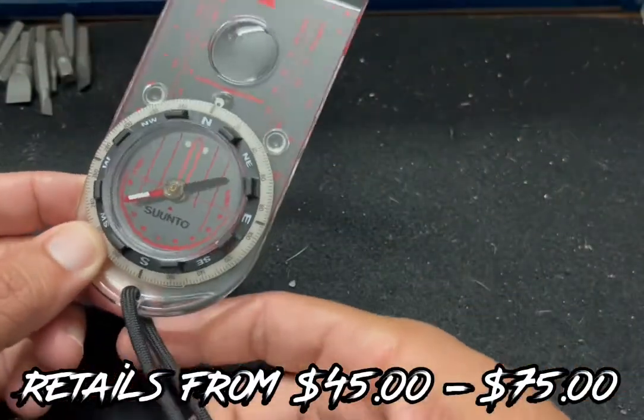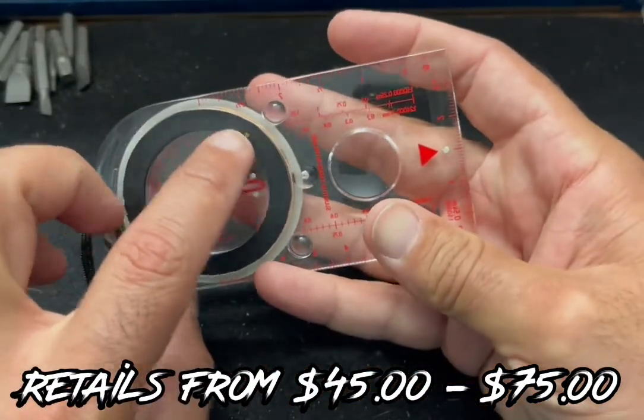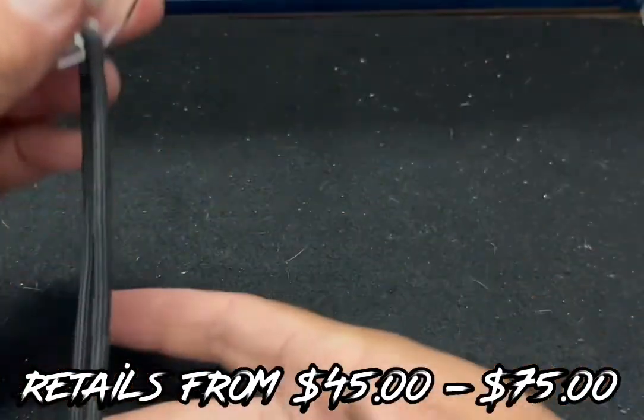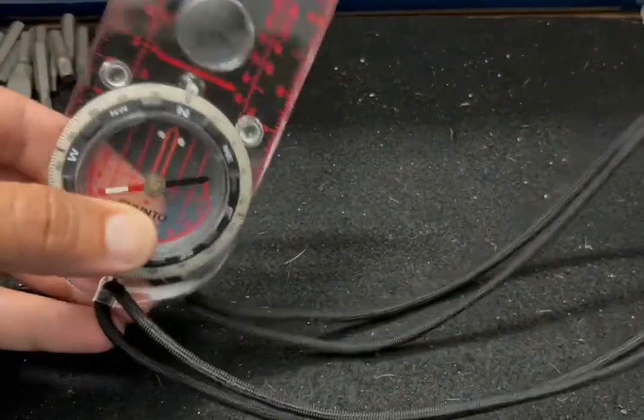I did a couple little things to them. It came with a little key for the back right here to adjust declination. I got rid of it, so I just have 550 cord. I gave it a lot of cord so I can hang it around my neck or maybe tuck it into my pocket.